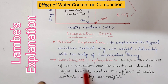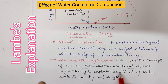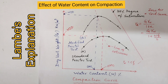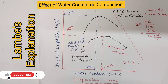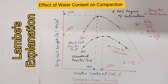Another explanation was given by Lamb in 1958, which uses the concept of soil structure and electrical double layer theory to explain the effect of water content on dry unit weight. In the case of cohesive soils, there is an attractive force — namely the van der Waals forces — which acts between two soil particles, and a repulsive force which is due to the double layer of adsorbed water tending to come into contact with each other.